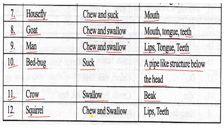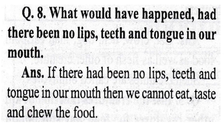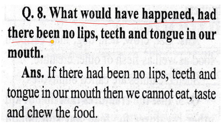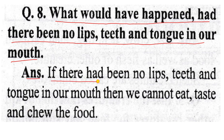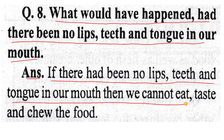Number twelve: squirrel — chew and swallow — lips and teeth. Next question: What would have happened had there been no lips, teeth and tongue in our mouth? Answer: If there had been no lips, teeth and tongue in our mouth, then we cannot eat, taste, or chew the food.